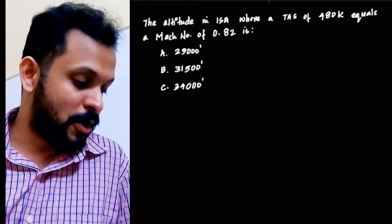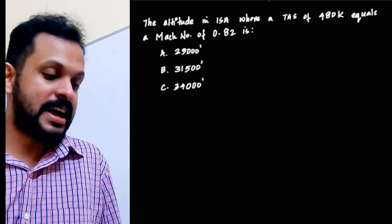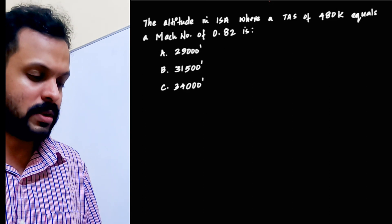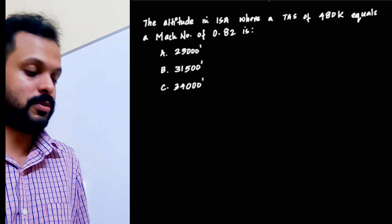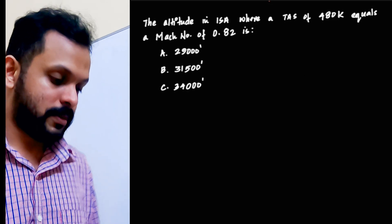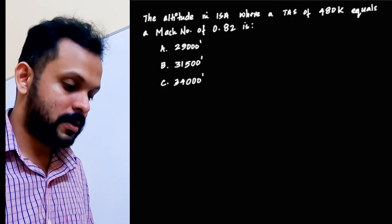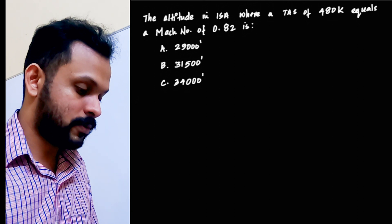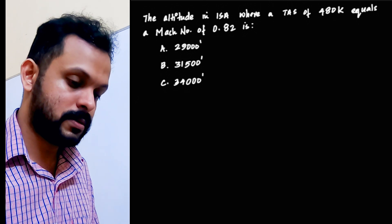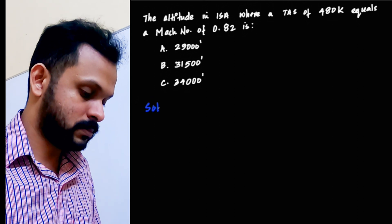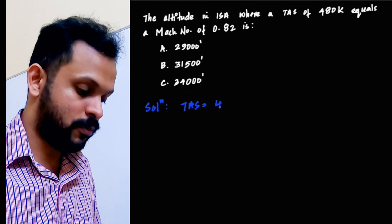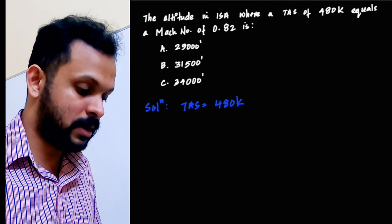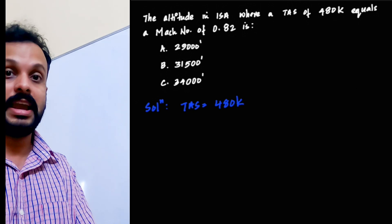Alright, another question. The altitude in ISA where a TAS of 480 knots equals a Mach number of 0.82 is... You are given three different options. In this question, let us put down the parameters here. You have a TAS of 480 knots, true air speed, which is the speed of the air over the wings in nil-wind conditions.